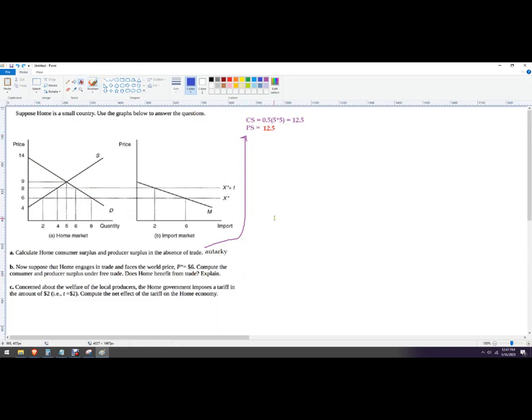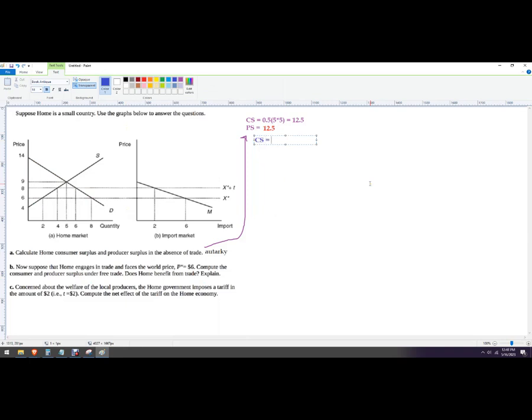So consumer surplus for the second one under free trade, we're going to go 14 down to six, which is eight, eight rupees times eight units. So that's 64 and then half of 64 is 32 rupees. So the consumer surplus now is 32 rupees, much better than 12.5. The producer surplus is going to be much smaller. It's the area of this little triangle here. So two times two, I'll write out my steps here. So two rupees times two units that equals two.